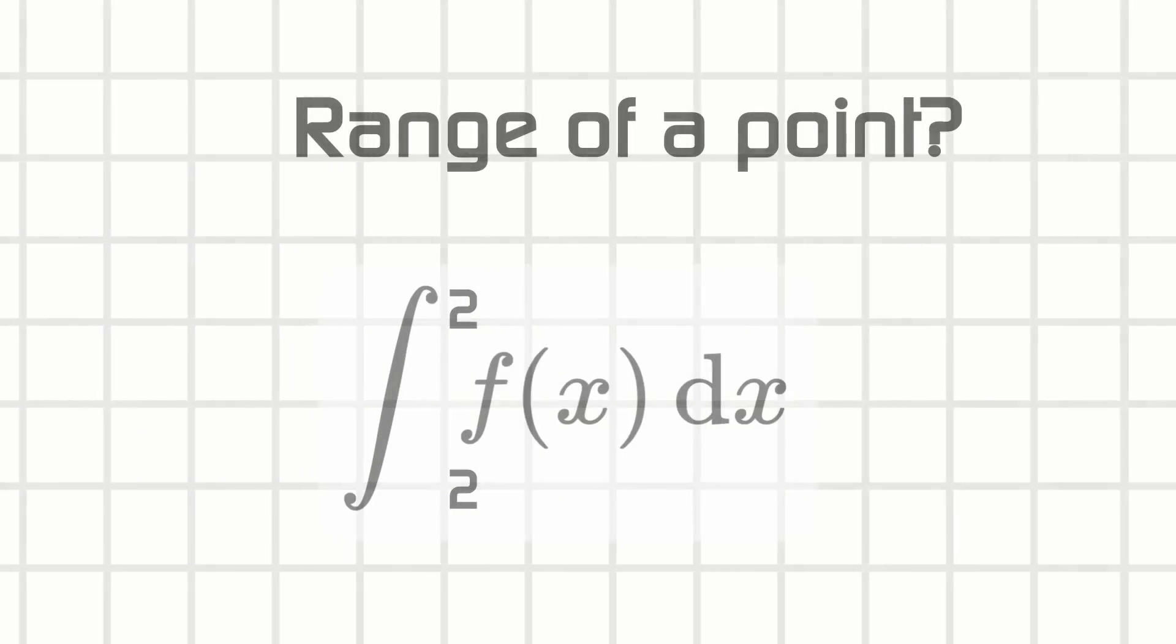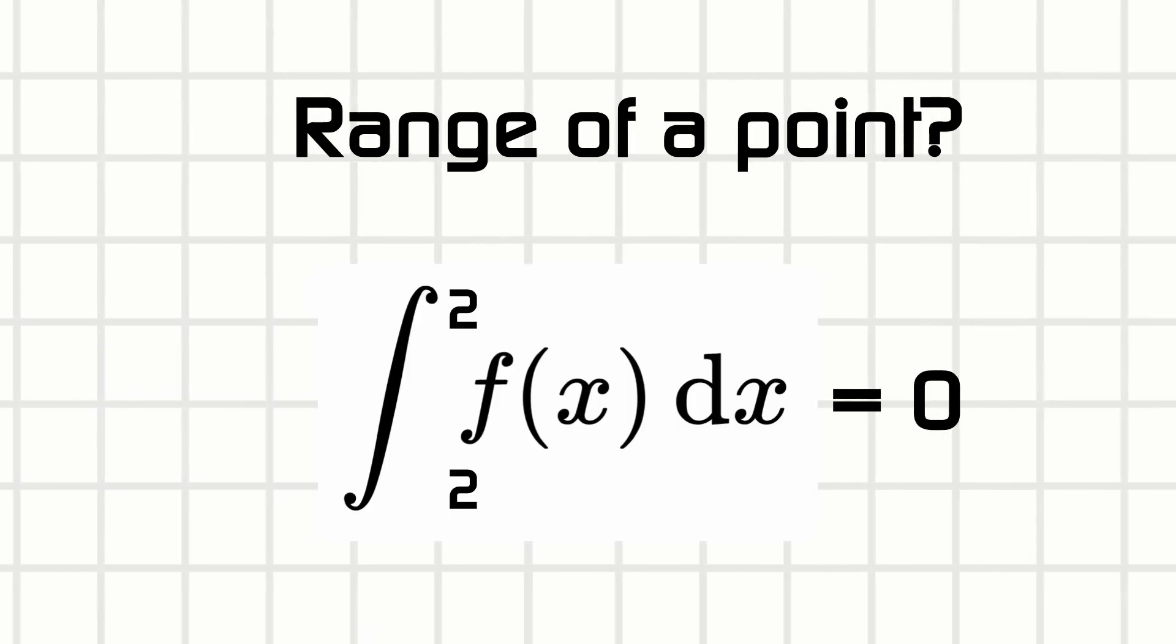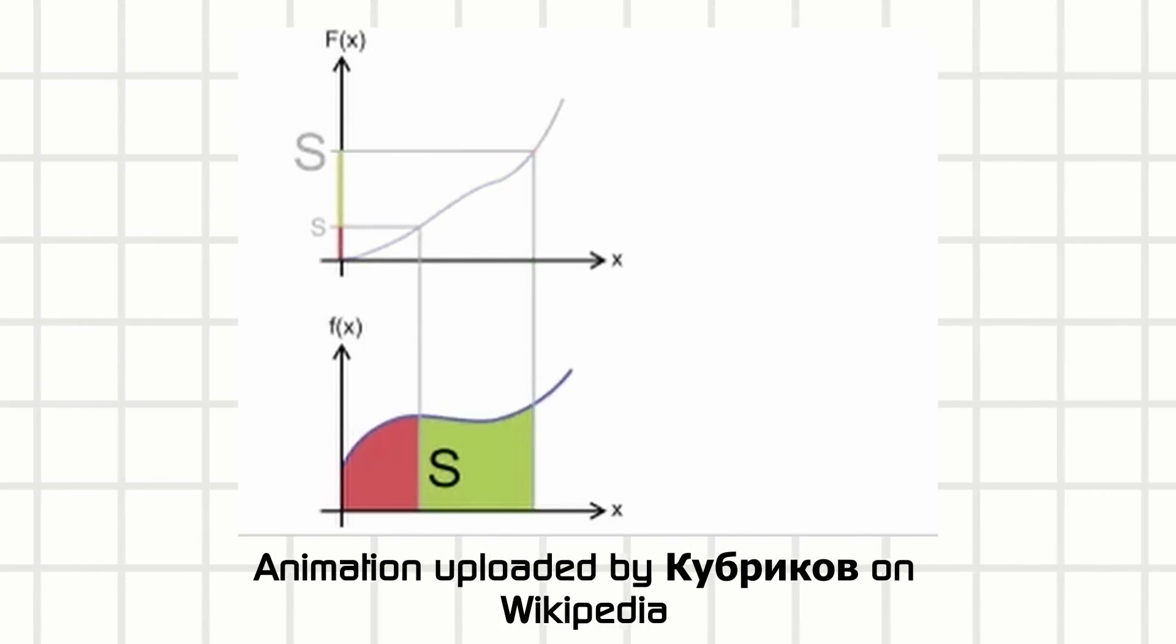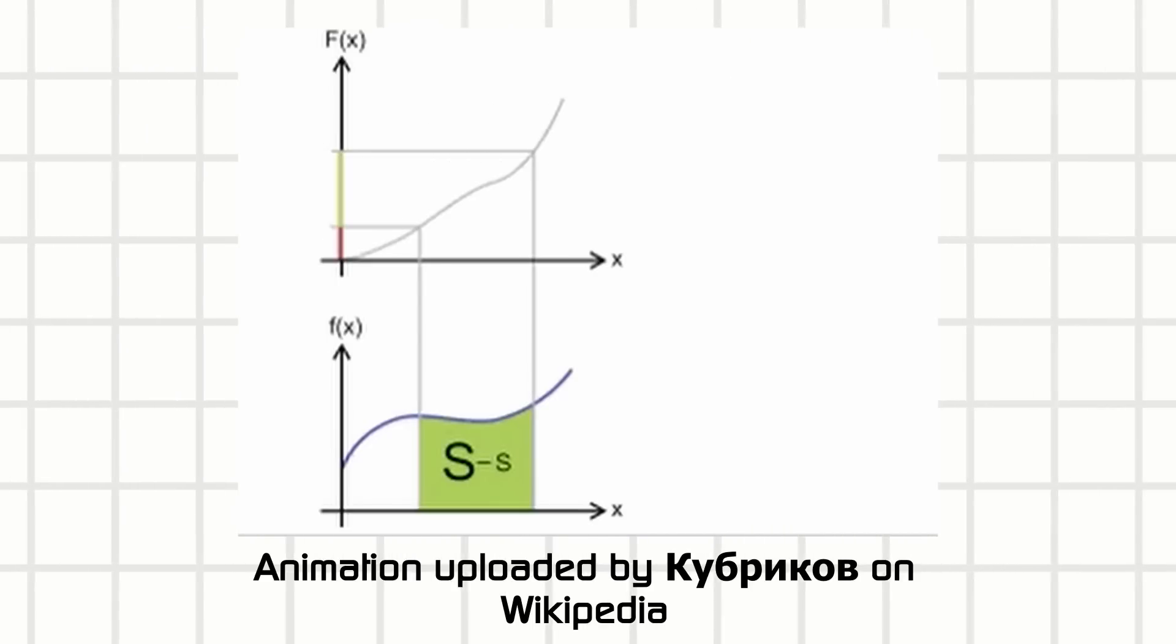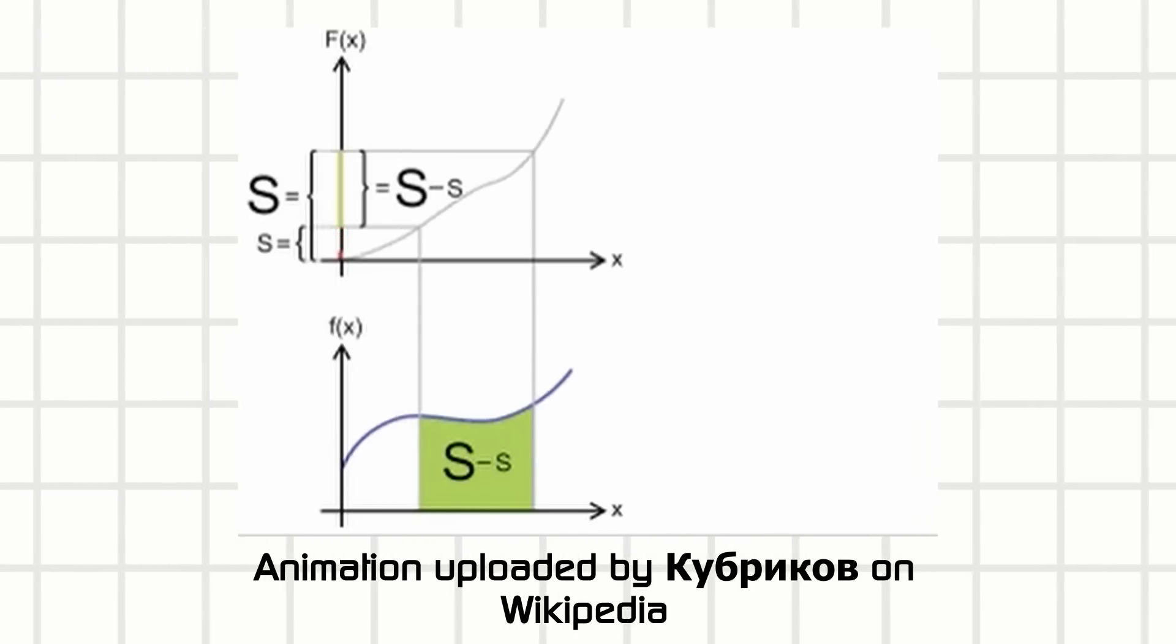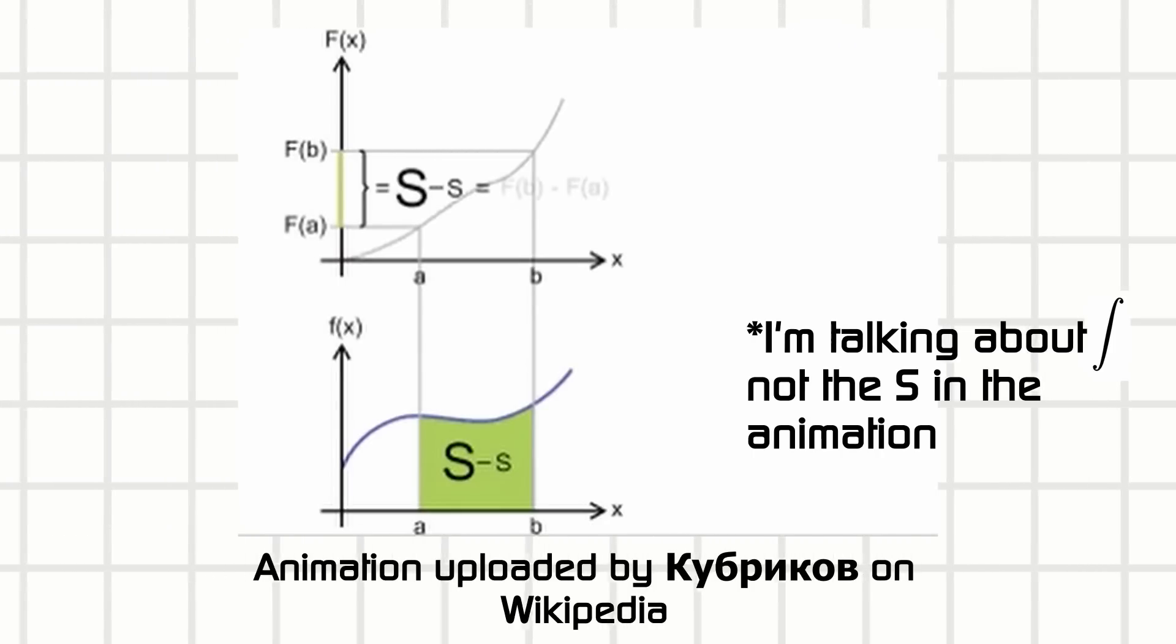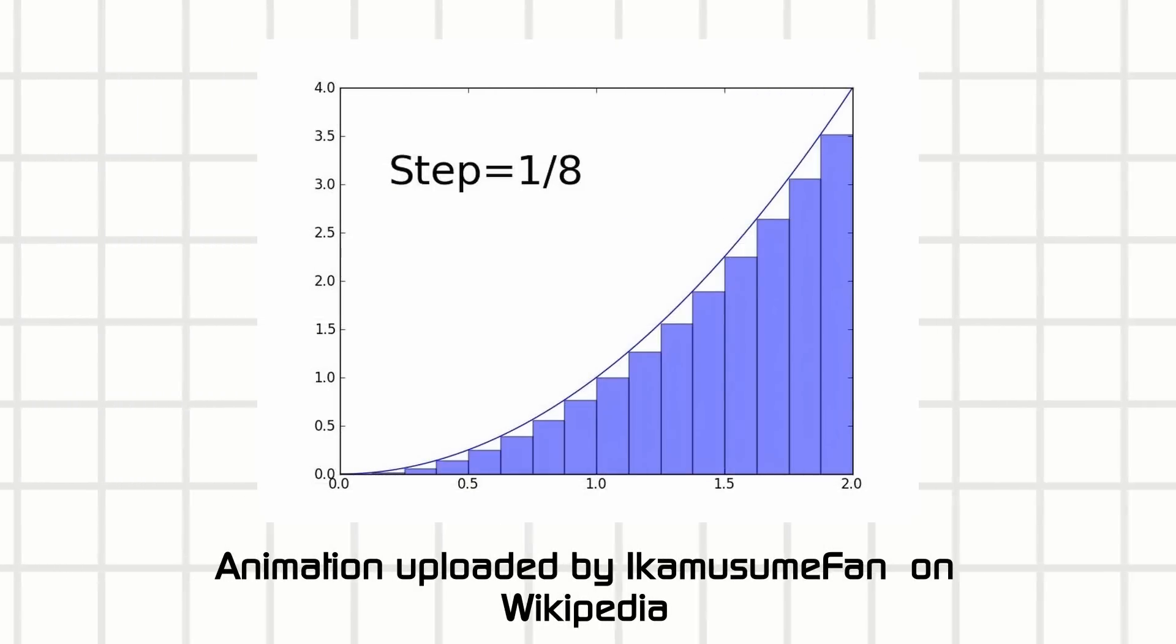So when you take an integral of a range of a certain point, instead of telling you the slope, it tells you nothing. Okay, well, what if the range is a little wider? And whoa, it tells you the area. The function you get by integration tells you how much is beneath the original function's curve or above if that function dips below the axis. It's like summing all the values. That's where the sum comes from. The big S? Yeah.